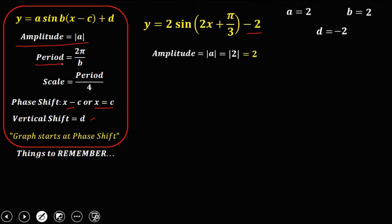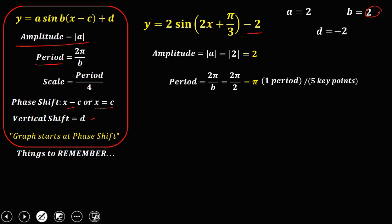For the period, that's 2π over B. B is 2, so the period is 2π over 2, which equals π. So π is one period or 5 key points. For the scale, that's period over 4. The period is π, so we have π over 4. Therefore, the scale or interval is π over 4.